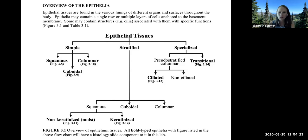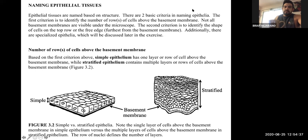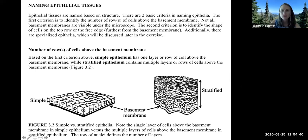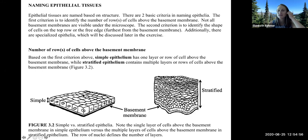These types of tissues line all the linings of your body cavities and all of your organs. How do we name epithelial tissue? Epithelial tissues are named based on their structure — there are two types of criteria: how many rows of cells are in the epithelial tissue, and the shape of the cells. The number of rows of cells above the basement membrane will characterize whether the epithelial tissue is simple or stratified.